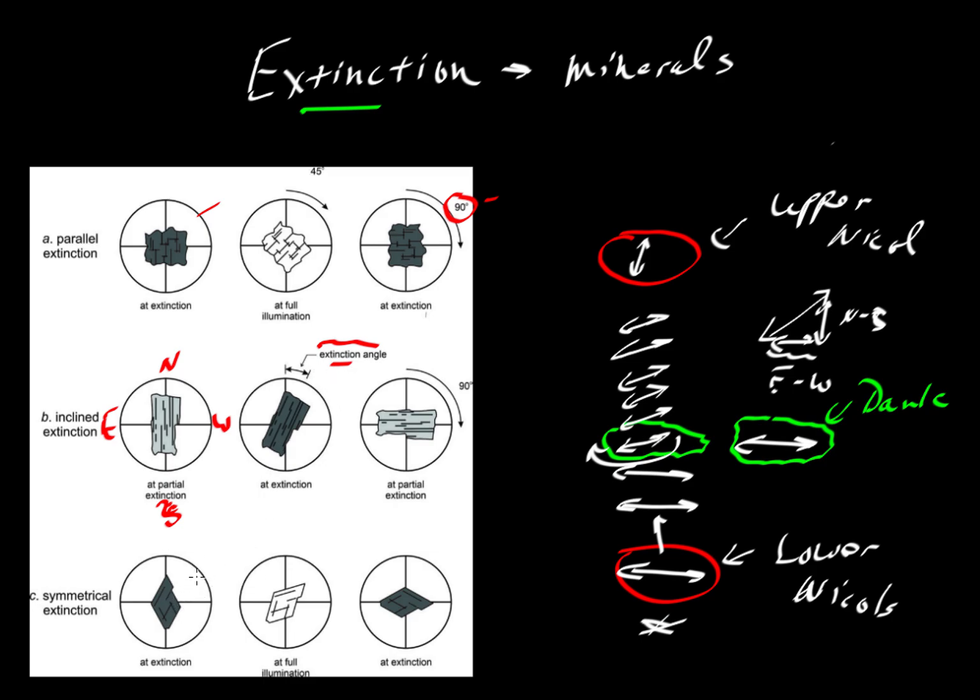We could do the same thing with minerals that have two directions of cleavage. This guy had just one prominent direction of cleavage, but let's say you have two directions of cleavage, one there and one there. We can measure the extinction angles. If the mineral goes at extinction as that angle is bisected, where this angle is the same as that one, then we would say that it has symmetric extinction. Although if minerals have two directions of cleavage, that extinction doesn't necessarily have to be symmetric.